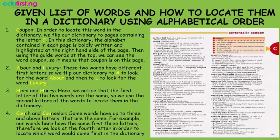Two: the words 'about' and 'luxury'. These two words have different first letters, so we can flip the dictionary to A to look for the word 'about' and then to L to look for the word 'luxury'. The next ones on our list are 'hero' and 'hurry'. Here we notice that the first letters of the two words are the same, so we use the second letters of the words to locate them in the dictionary.